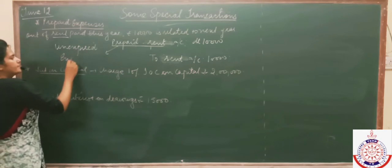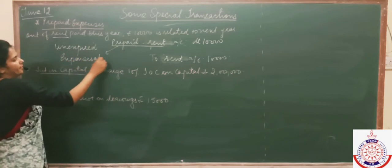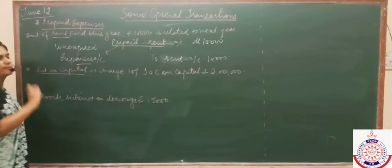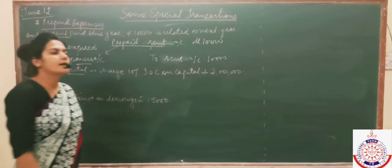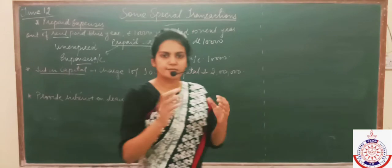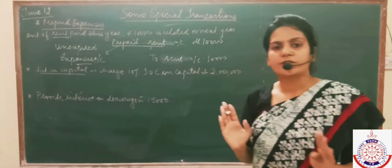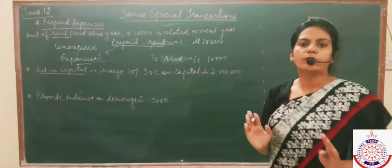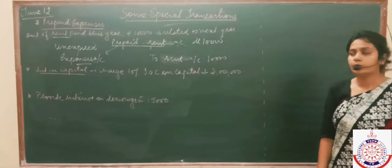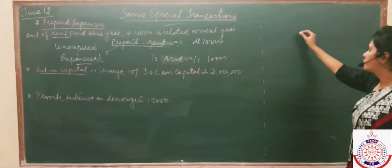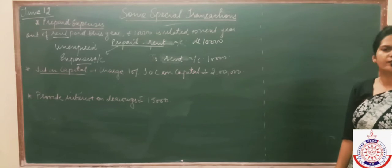If in a question it is written that unexpired insurance is a certain amount, it means the question is referring to prepaid insurance. I hope this concept is clear to you. Now let's move to the next concept, which you have already discussed a number of times — it is not new for you.